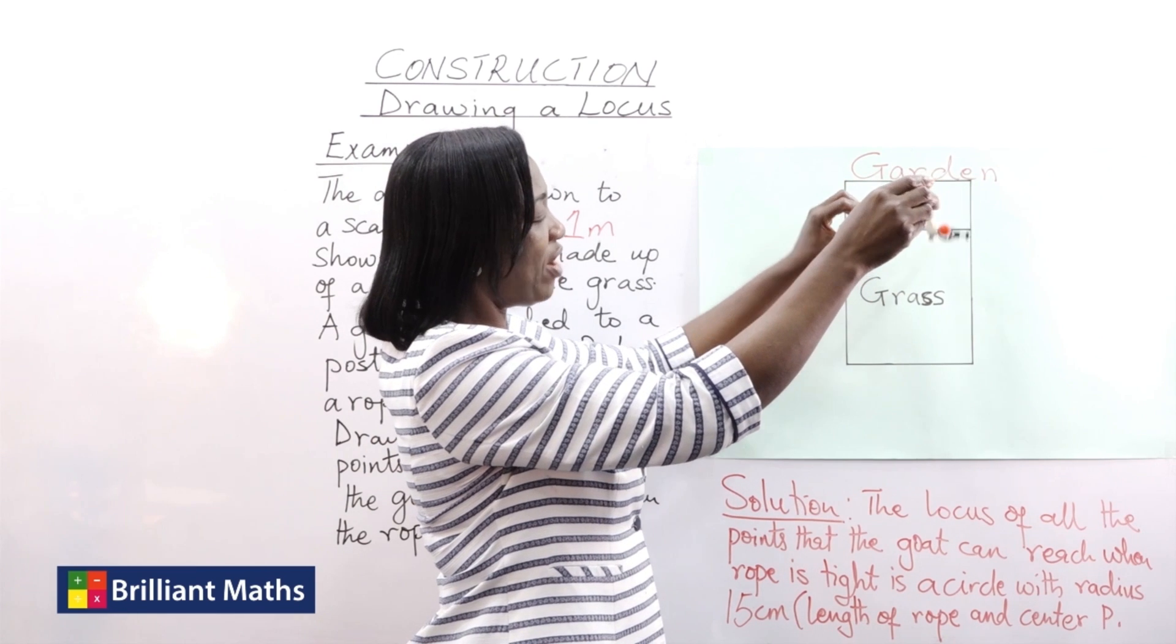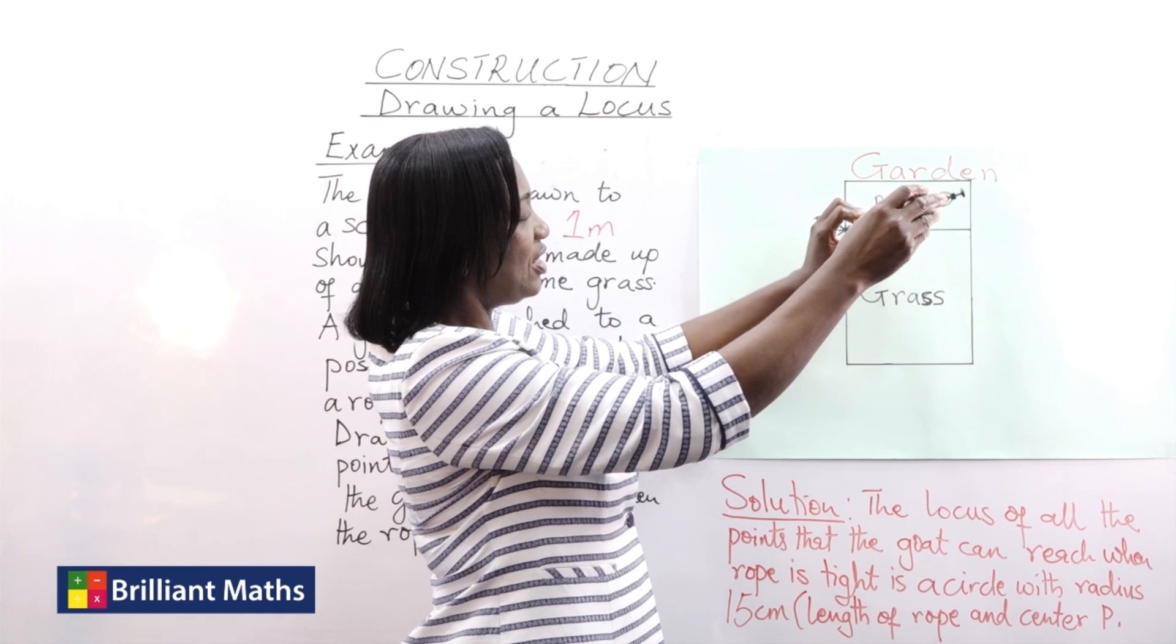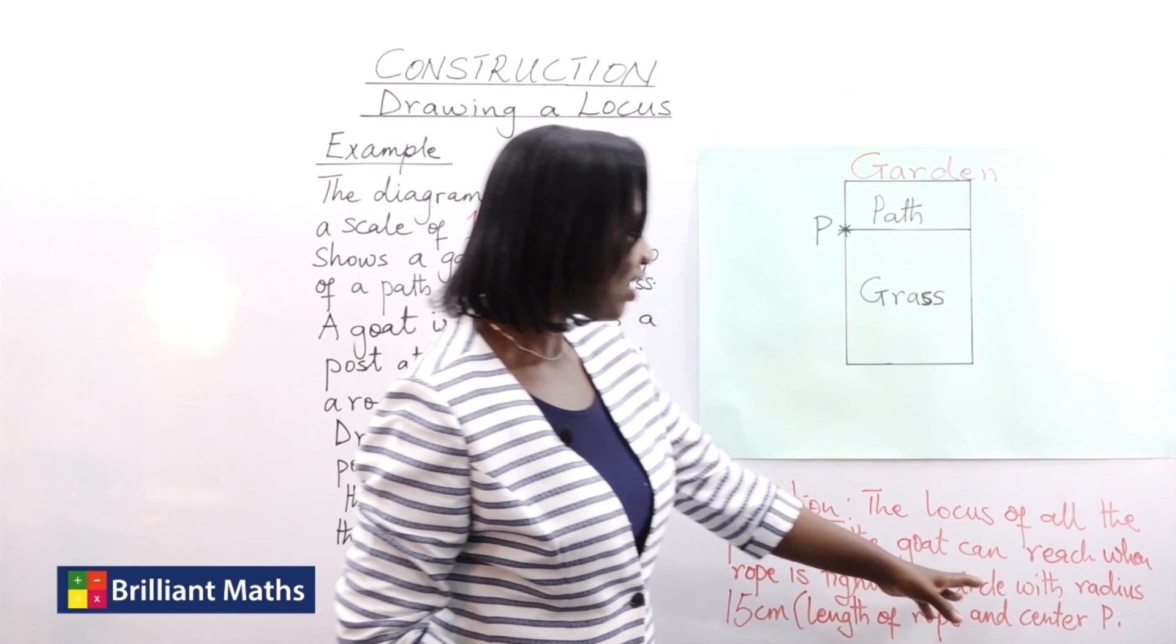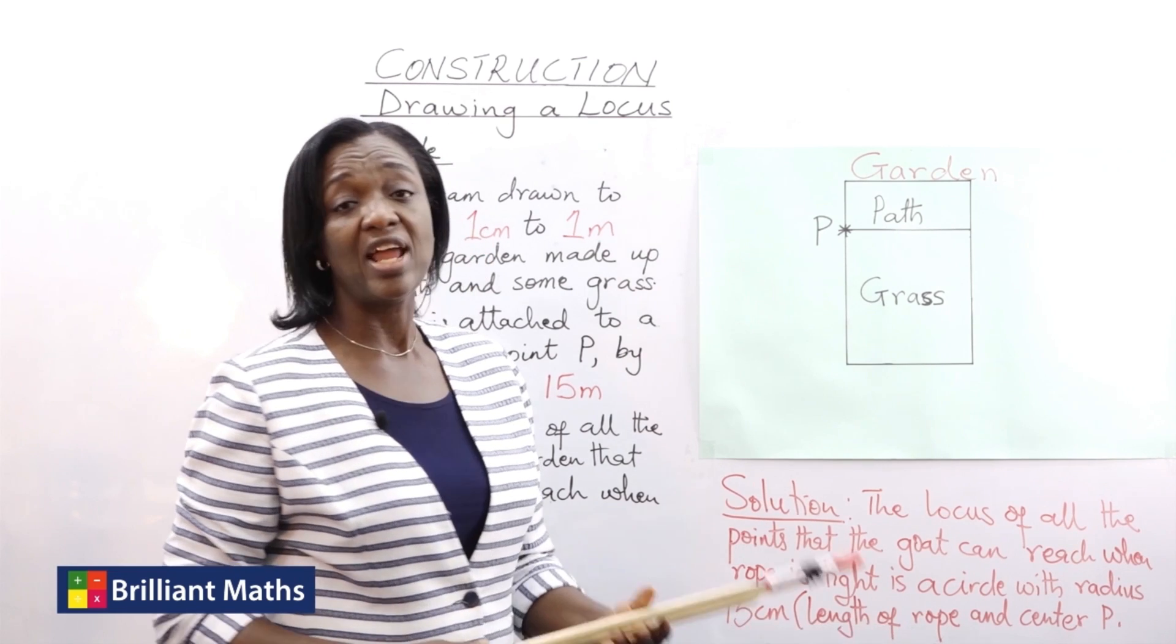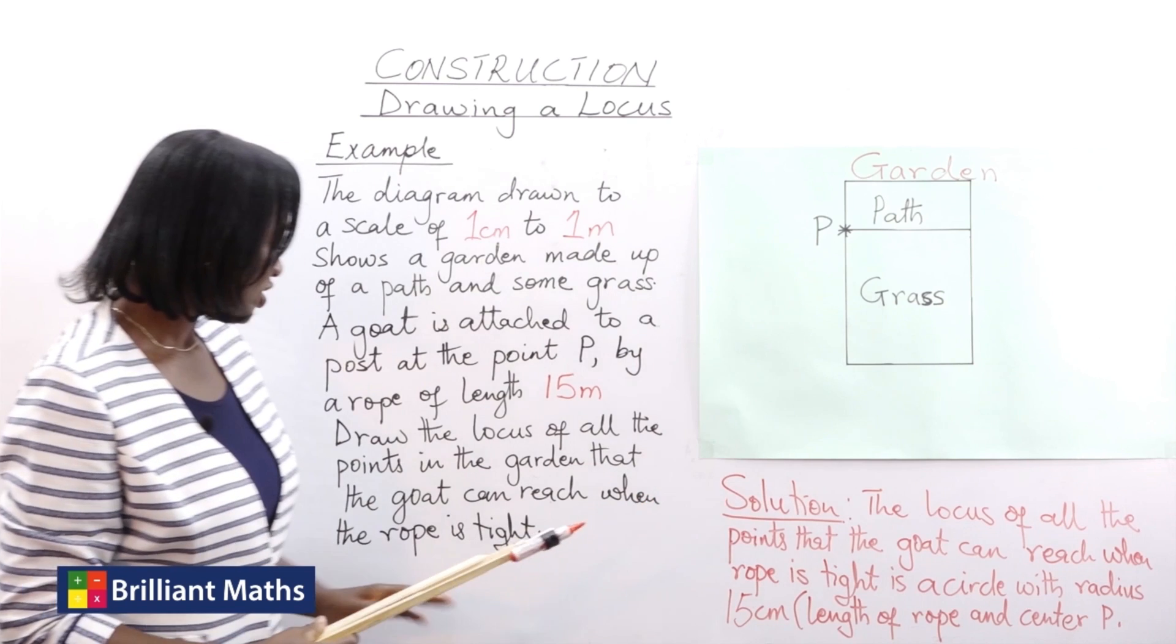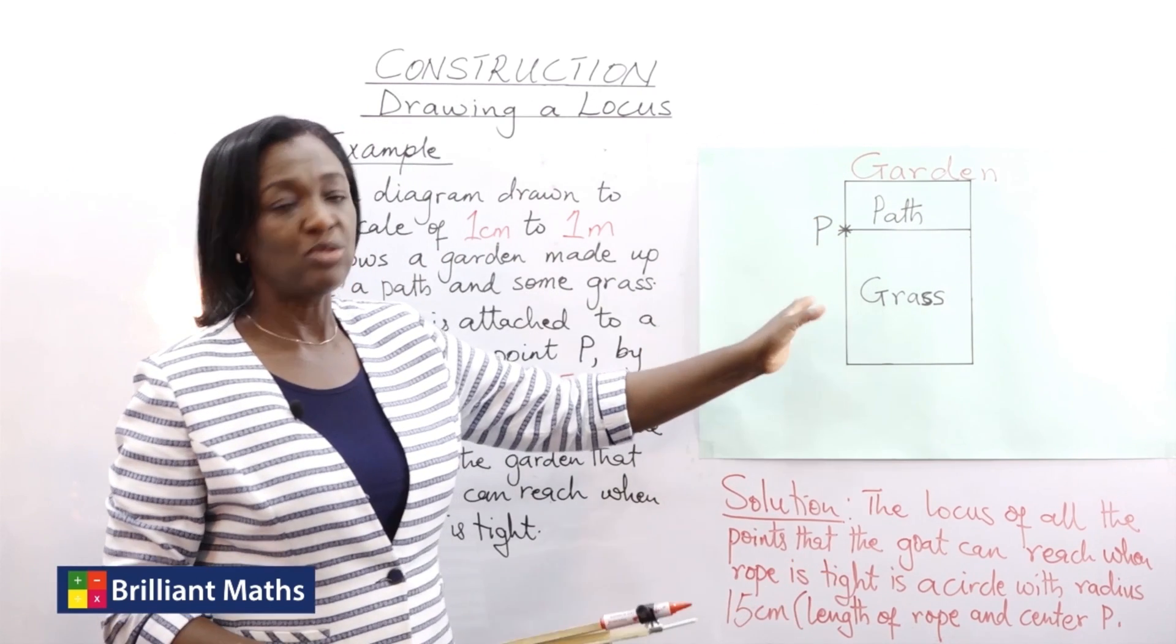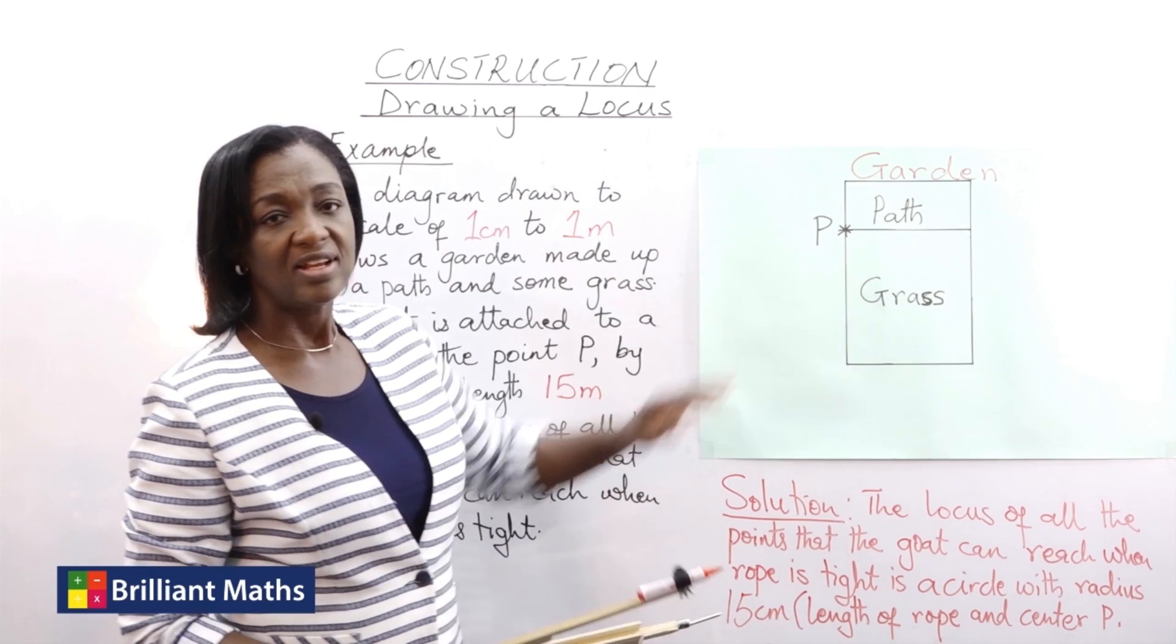The locus of the points that the goat can reach. So the locus of all the points that the goat can reach when the rope is tied is a circle with radius 15 centimeters which is the length of the rope. However, because the question says it has to be within the garden,